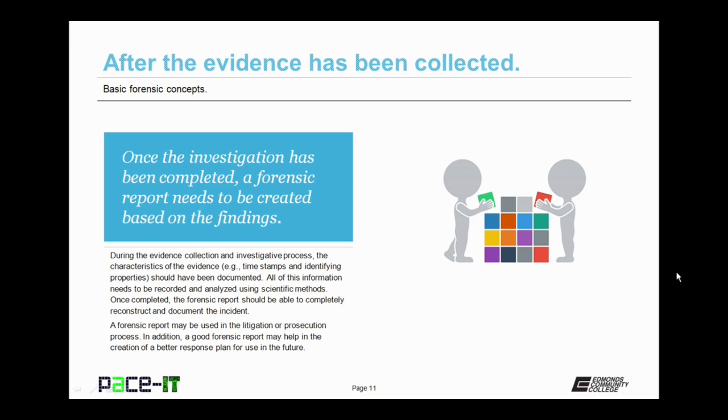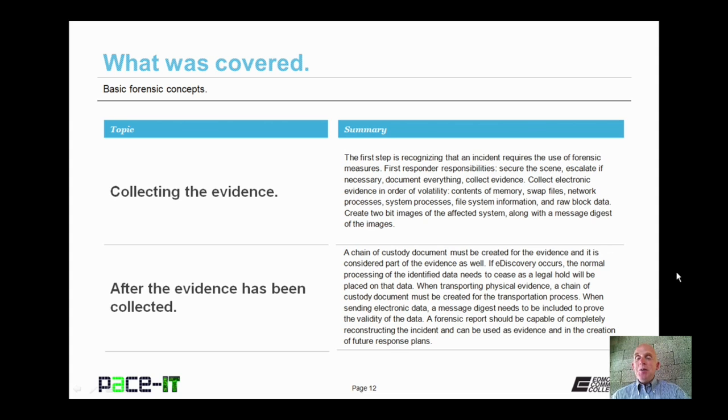Once the forensic process has concluded, or once the investigation has been completed, a forensic report needs to be created based on the findings of the investigation. During the evidence collection and investigation process, the characteristics of the evidence should have been documented. So you know what time stamps were present or any identifying properties that are associated with that evidence. All of this information needs to be recorded and analyzed using scientific methods. Once completed, the forensic report should be able to completely reconstruct and document the evidence. A forensic report may be used in the litigation or prosecution process. In addition, a good forensic report may help in the creation of a better response plan for use in the future. Now that concludes this session on basic forensic concepts. I talked about collecting the evidence, and then we concluded about what happens after the evidence has been collected.